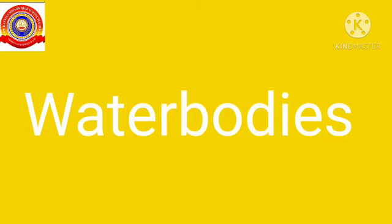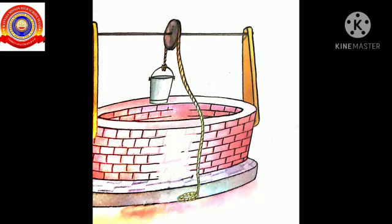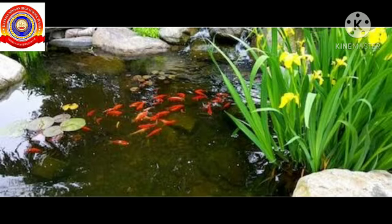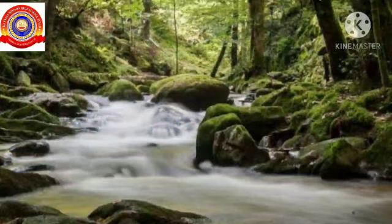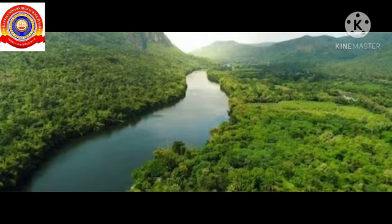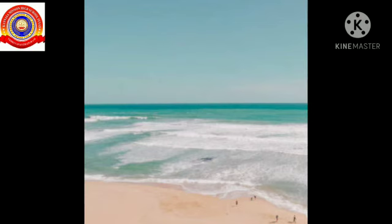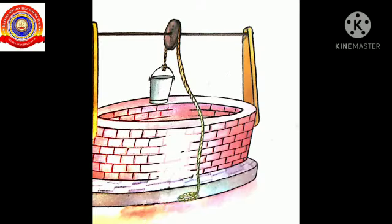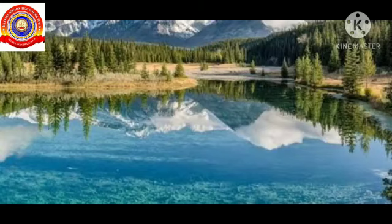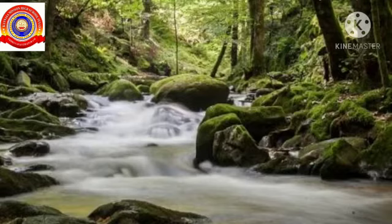So you have to find out the water bodies on the earth. The main water bodies on the earth are wells, ponds, lakes, streams, rivers, seas, and so on. In the next class we have to study about water bodies in detail.